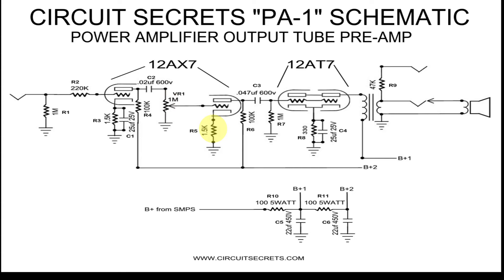R5 is the cathode resistor for the second half of the 12AX7. Notice it does not have a complementary cathode bypass capacitor. This is to reduce the gain of stage 2, as it is always best practice to stagger the gain stages.